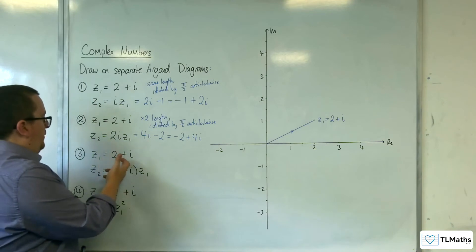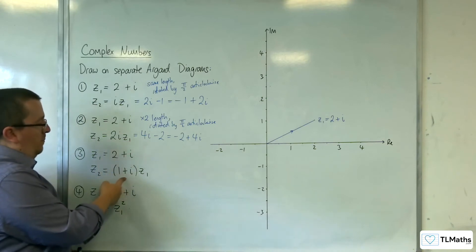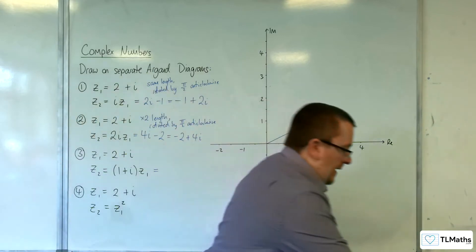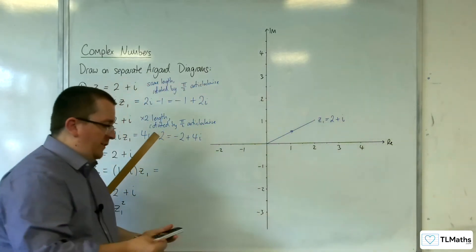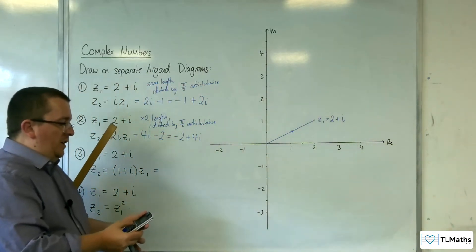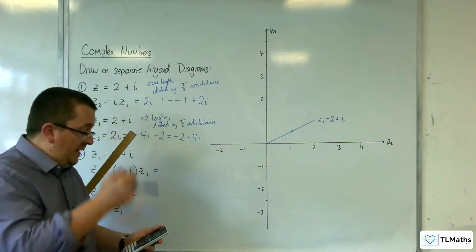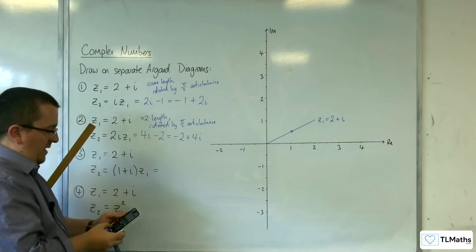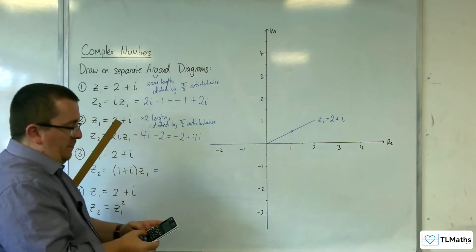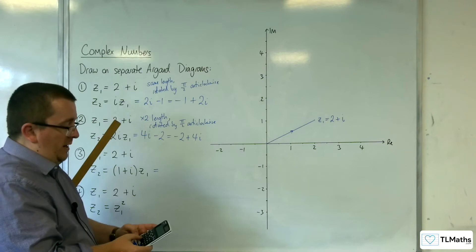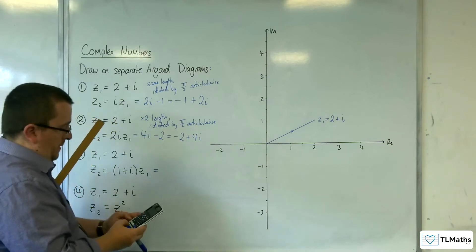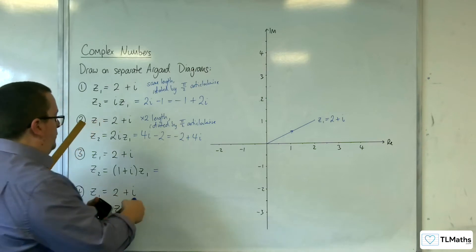We've got 2 plus i, and we're multiplying it by 1 plus i. Let's just get the calculator to do that. You want to go to menu, and then option 2 on your Casio ClassWiz. So we want 1 plus i in a bracket, i is above the number 8, so ENG. Then times that by 2 plus i. We get 1 plus 3i.